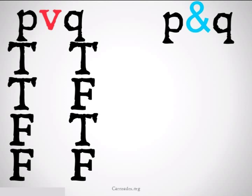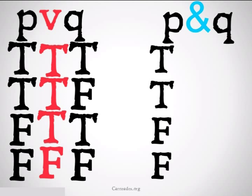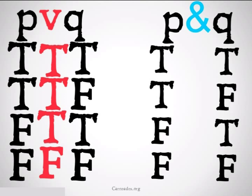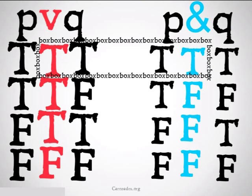We fill in under P and Q, and we remember the only time that a disjunction is false is when both of the disjuncts are false. We do the same over here, filling in for P and Q, and remember the only time a conjunction is true is when both the conjuncts are true. We look and we see that there is one world in which both of them are true — that would be the world where P is true and Q is true.